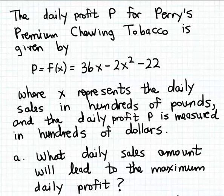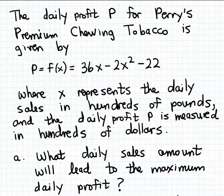The output P is the daily profit from the sale of the chewing tobacco, measured in hundreds of dollars. What we want to determine is what daily sales amount will lead to the maximum profit — that's the first question — and then what is that maximum profit.